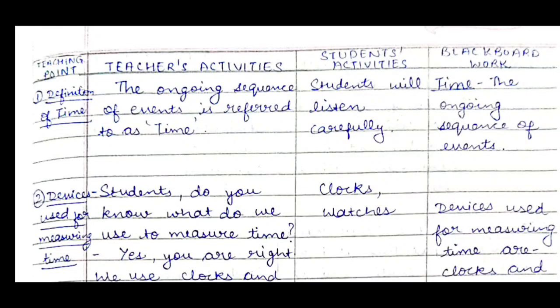In the first teaching point, we will cover the definition of time. The teacher will explain why time is important and say: the ongoing sequence of events is referred to as time. She will write this on the blackboard — 'time is the ongoing sequence of events' — and students will listen carefully.